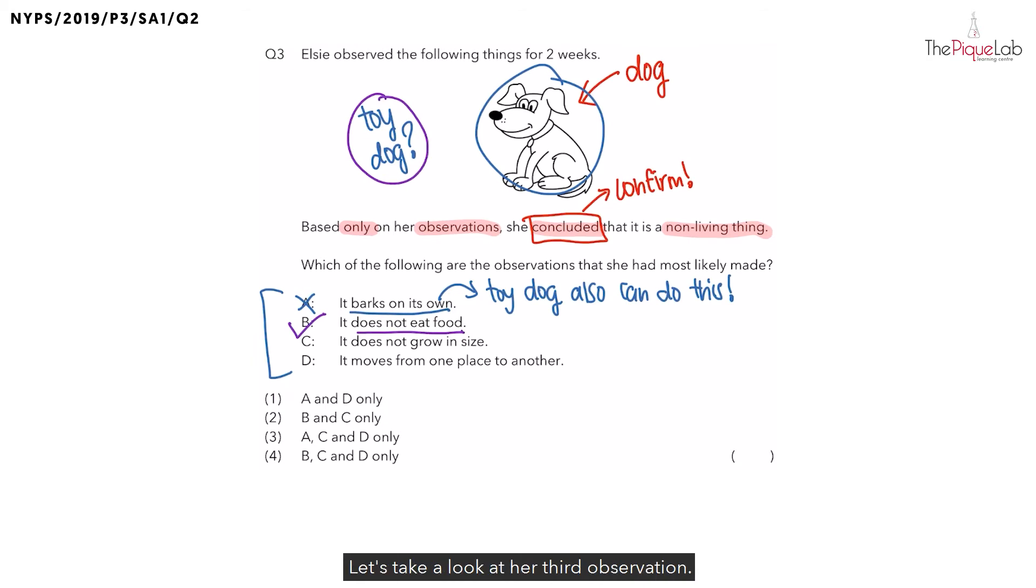Let's take a look at her third observation. It does not grow in size. Let's consider the two scenarios again. If this dog is a living thing, will it be able to grow in size? If you recall, one of the characteristics of living things is that living things can grow. So if this dog is living, it would be able to grow in size. However, if this is a toy dog, would this toy dog be able to grow? No, it would not. That's why the third observation would allow Elsie to confirm that this is also a non-living thing.